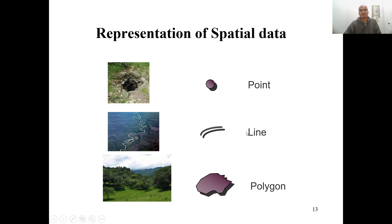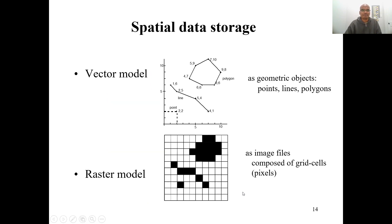Spatial data exists in different forms on the earth's surface, but to simplify its representation in GIS, there are certain approaches. One of the most important approaches is representing spatial data using point, line, and polygon symbols. Depending on the scale, you can represent any geographical information using these three entities. For example, a well can be represented as a point, a river as a line, and a forest as a polygon. These are the forms normally used in maps as well, and since GIS is derived from cartography, the same forms are used in GIS.